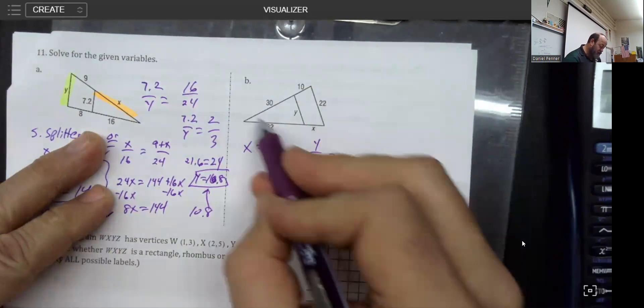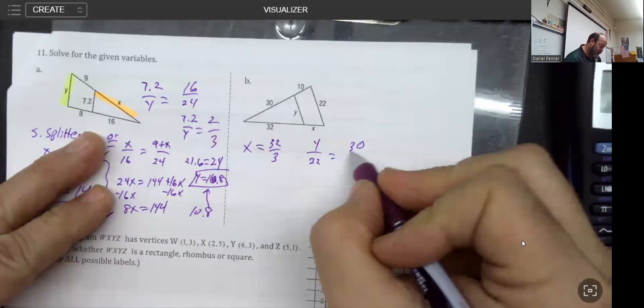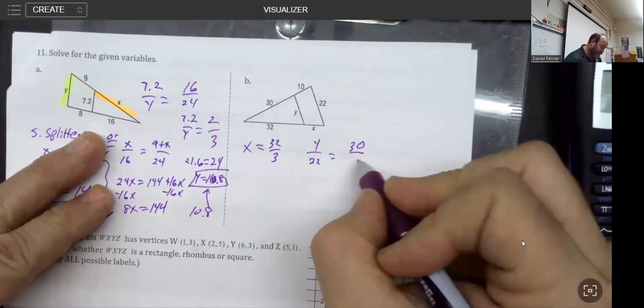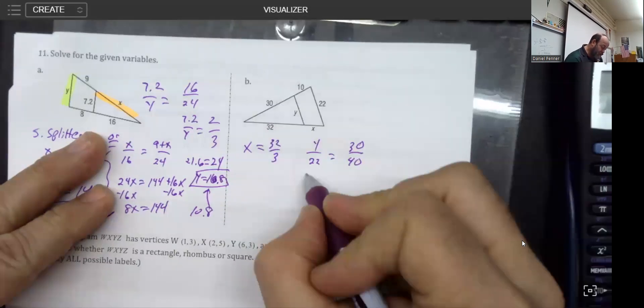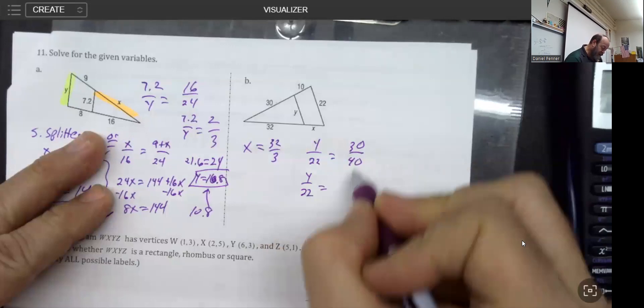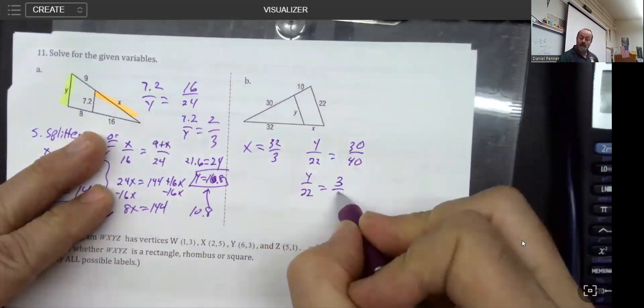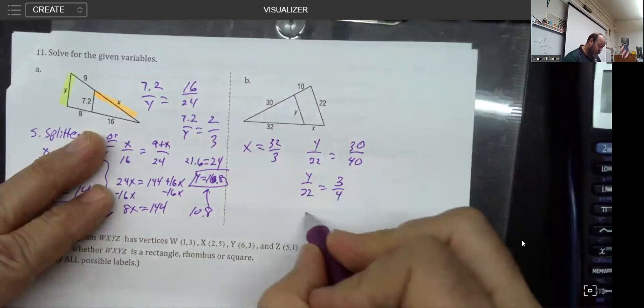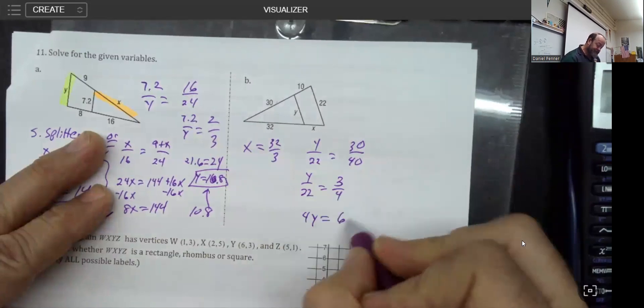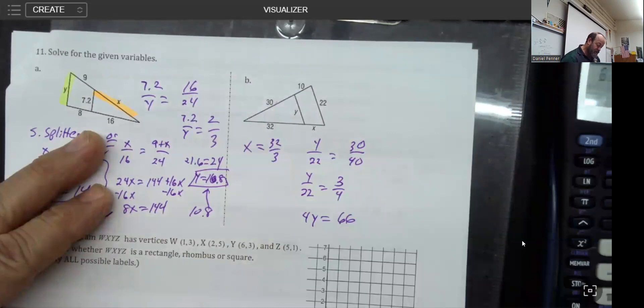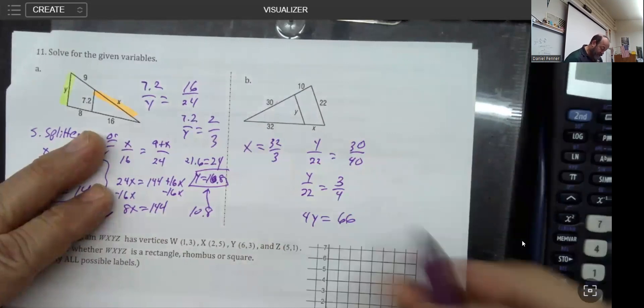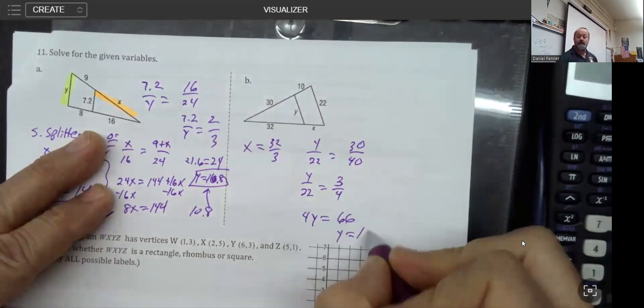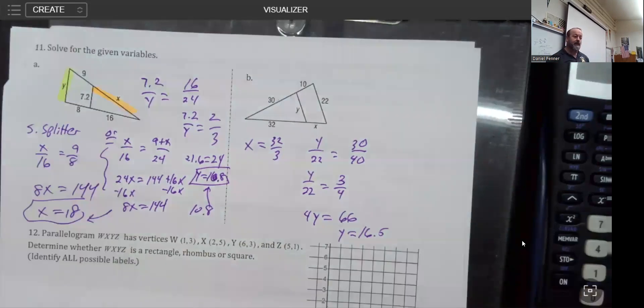When I looked at it, I looked at little triangle, which is 30, over big triangle, which is 30 plus 10 or 40. As I mentioned before, whenever you can reduce fractions, it's always smart to do so just to make life a little bit easier. I end up with 4y equals 66, and of course 66 divided by 4 is 16 and a half. I know that makes people nervous if everything isn't perfect, but that's pretty nice.